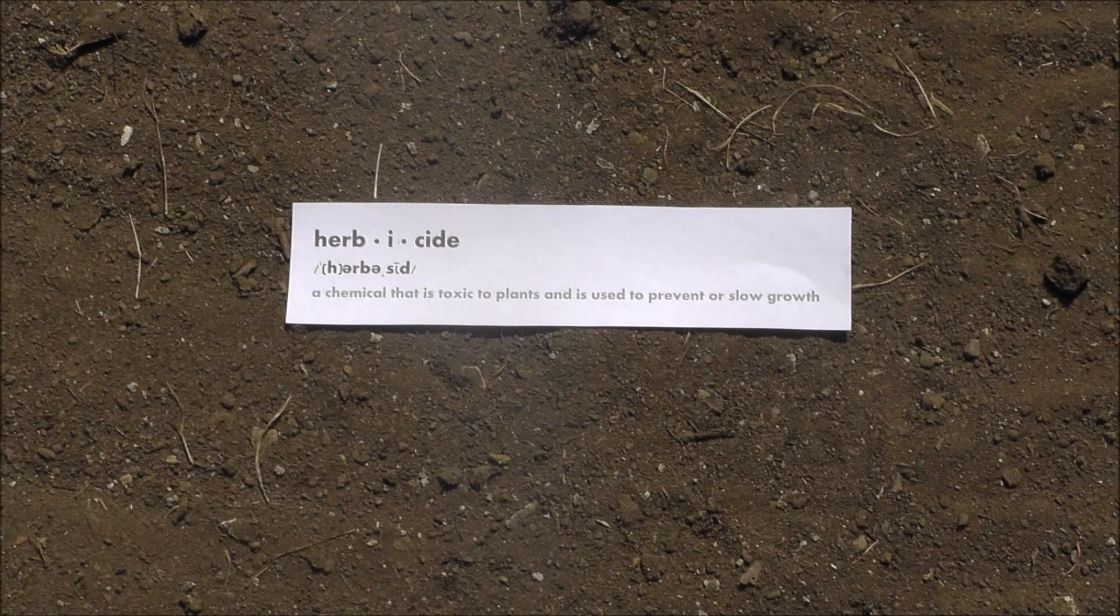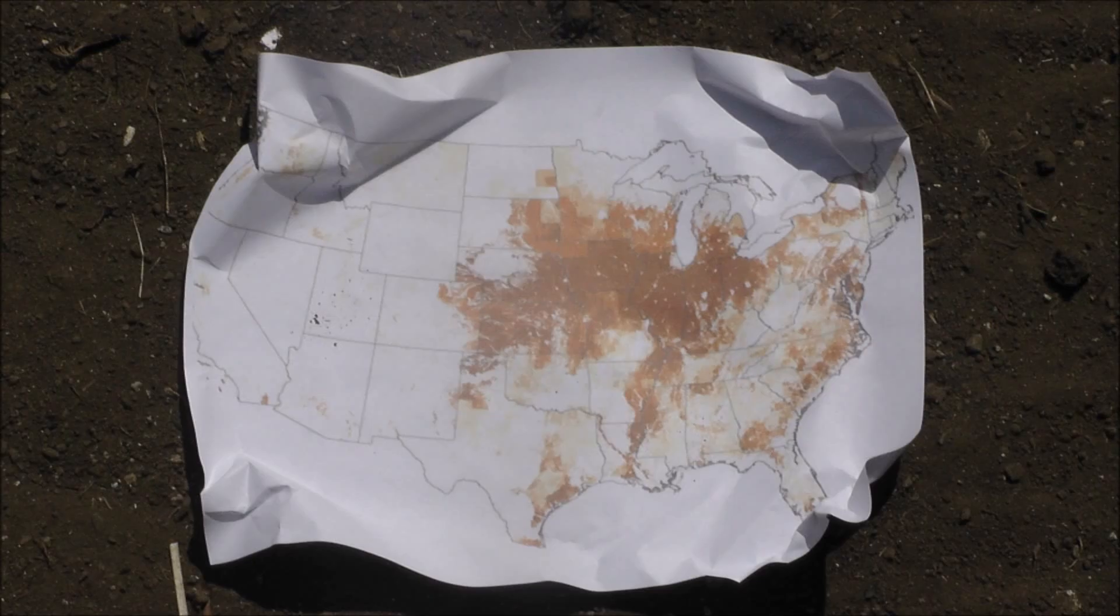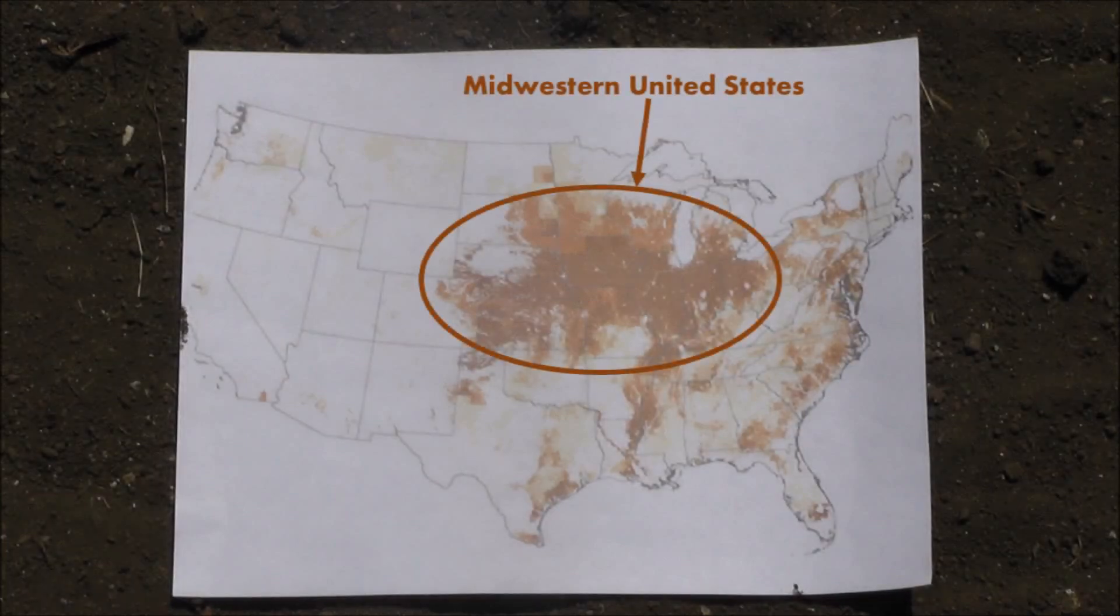An herbicide is a chemical that is toxic to plants and is used to prevent or slow growth. Every year atrazine is applied to over 50 million acres of agricultural land, mostly cornfields in the Midwestern U.S. This amounts to about 70 million pounds of atrazine.